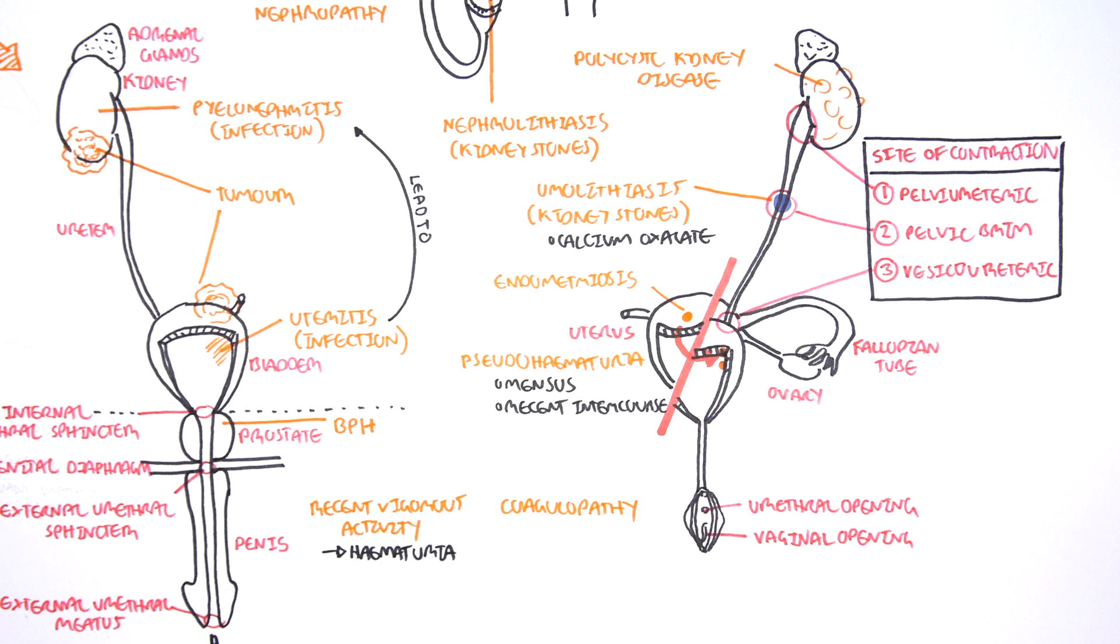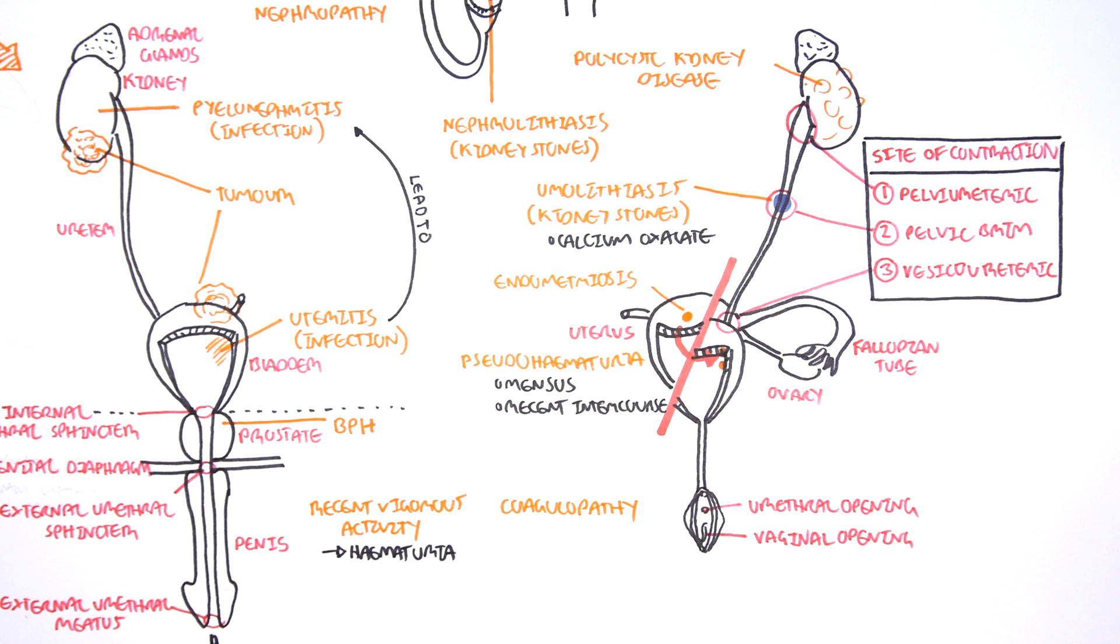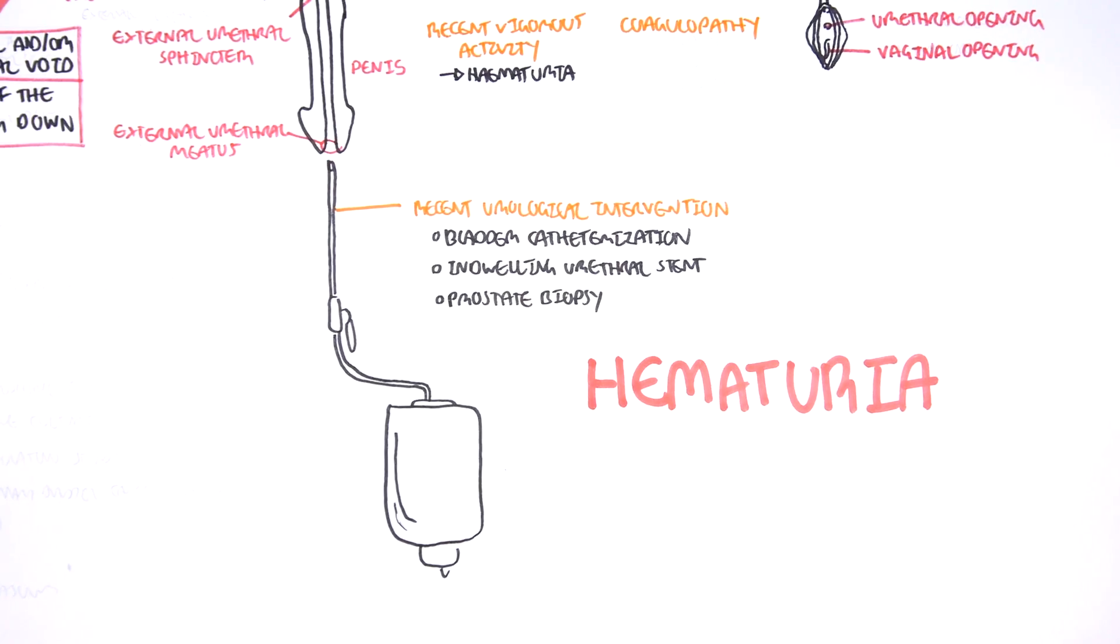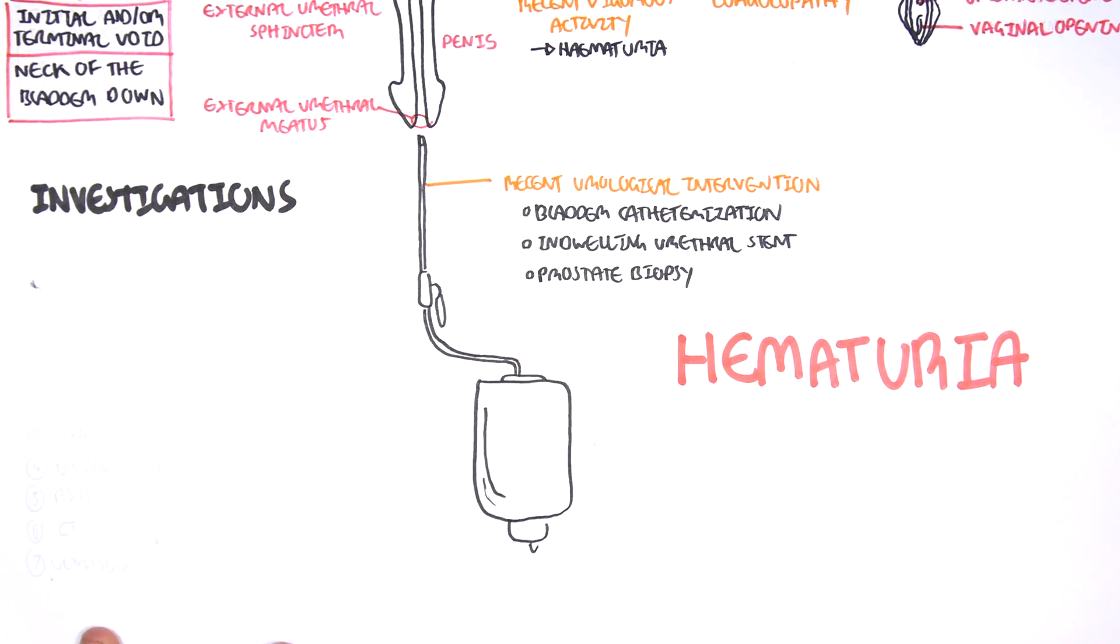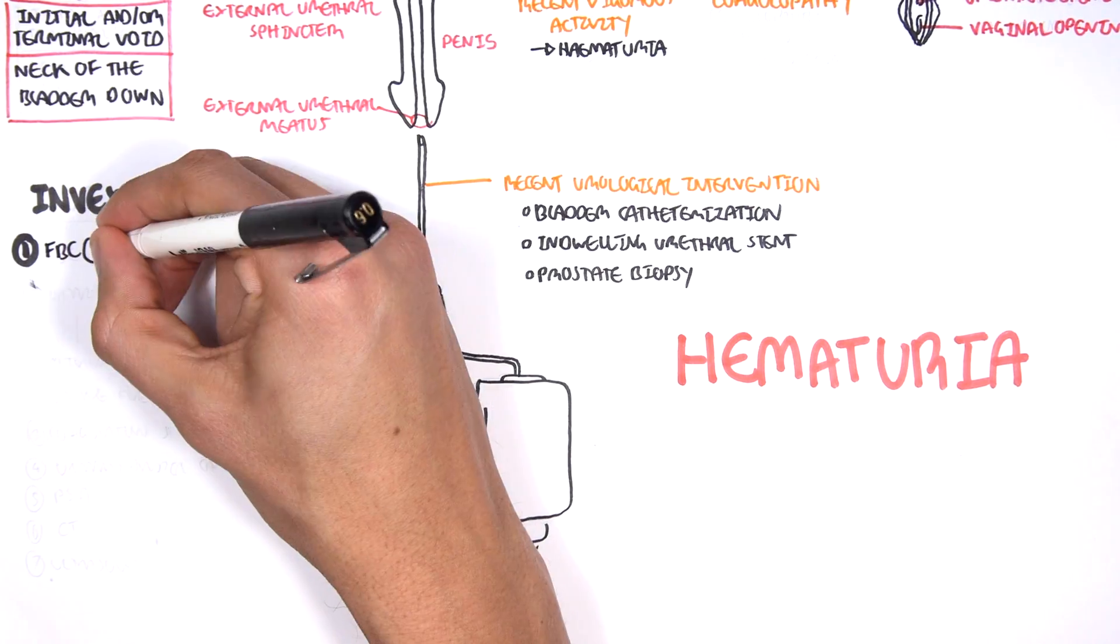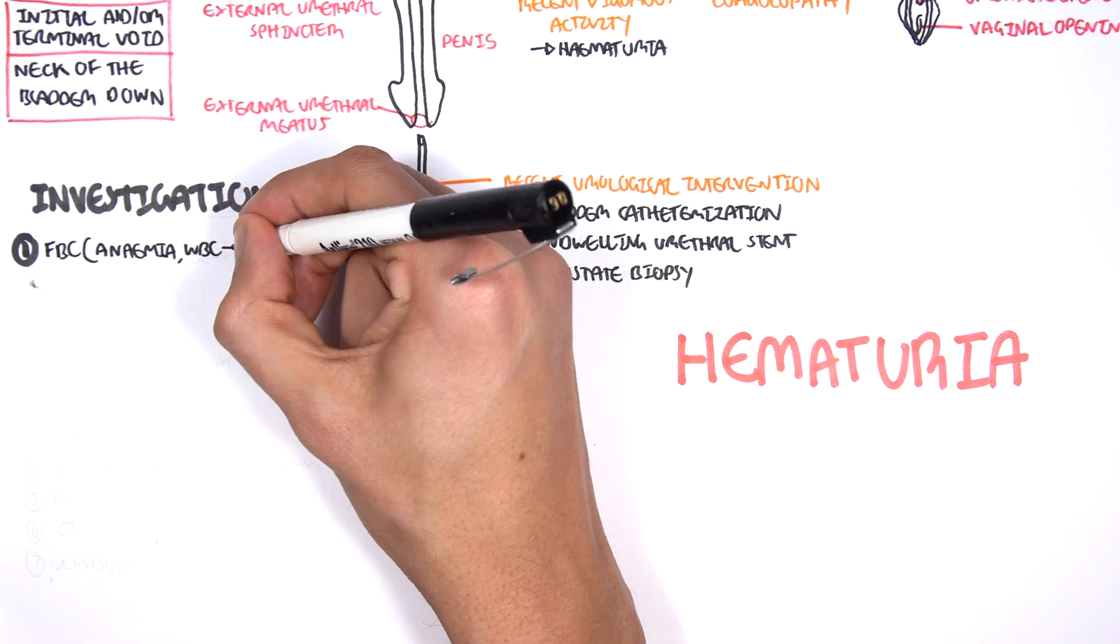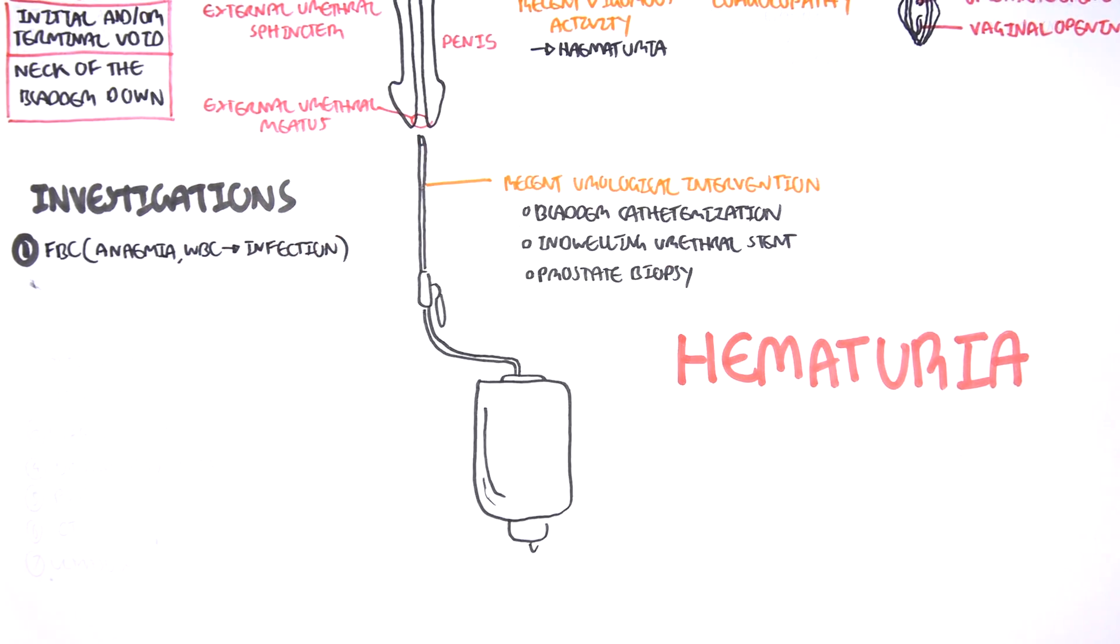Now, what are some investigations that can be performed? If someone presents with hematuria, what investigations would you order? Some investigations include a full blood count. Full blood count is to see if the person is anemic and to check for the presence of white blood cells, the numbers. High numbers would obviously indicate infection.